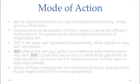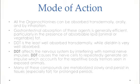Some of these pesticides are well absorbed transdermally while others are not. For example, DDT is least absorbed transdermally through the skin, whereas dieldrin is very well absorbed through the transdermal route.